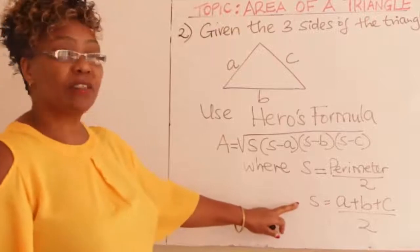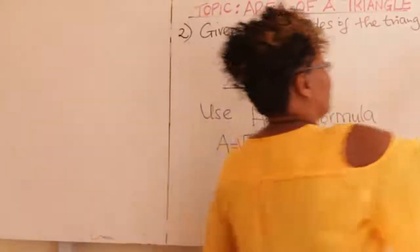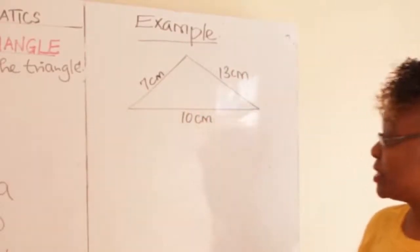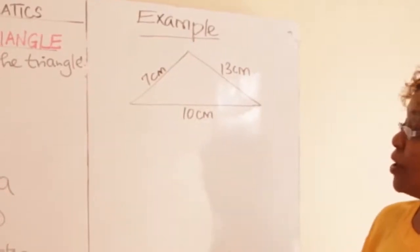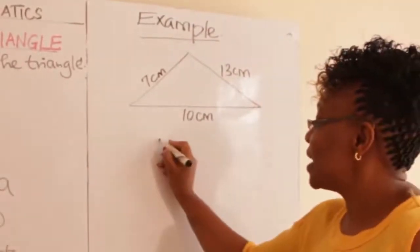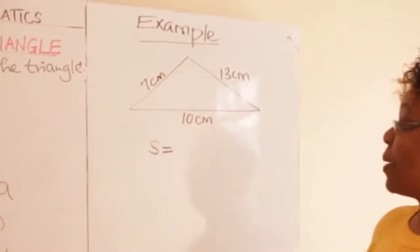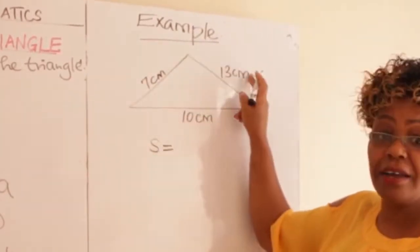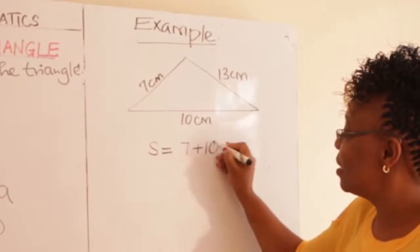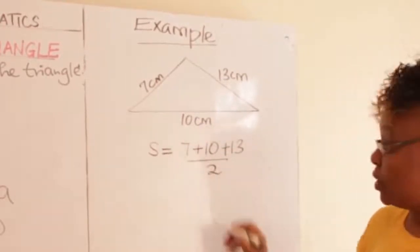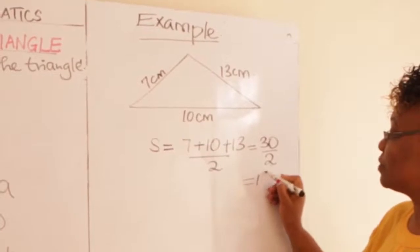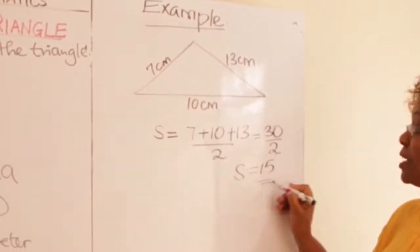Let us look at an example. You have this triangle and you are given the three sides. To get the area, you use Heron's formula. Let us first get our S. S is the perimeter divided by two, so: seven plus ten plus thirteen divided by two. You add these to get thirty over two, which gives you fifteen. So our S is fifteen.